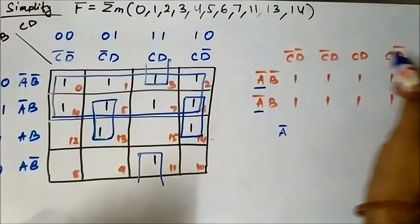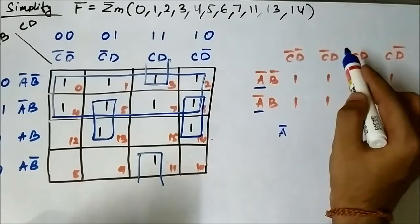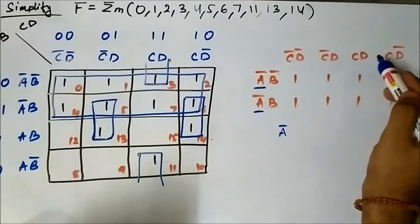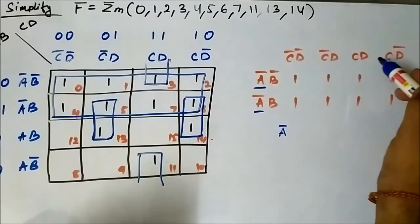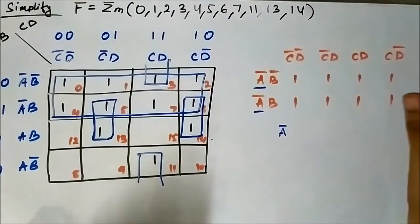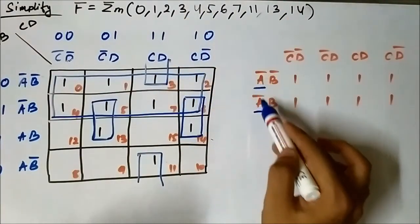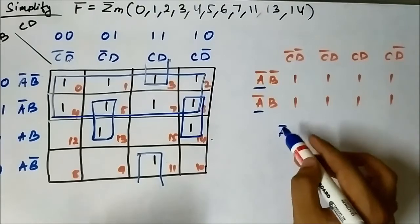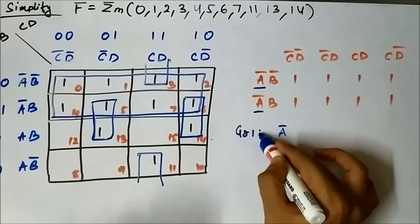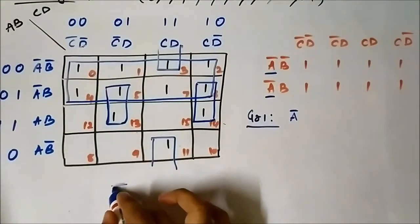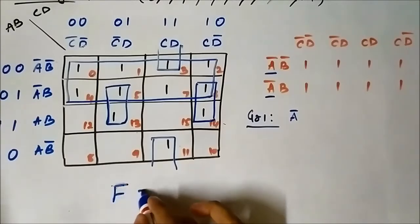In the vertical side we have c bar, d bar, c bar, d — up to this point c bar is common. Then we have c, d, so it is changing. c, d — d is common in these two. Then c, d and c, d bar — c is common. So there is nothing common in the four cells combined from the vertical side. Only from the horizontal side we have a bar common. So for this octet, the common variable is a bar for group 1.